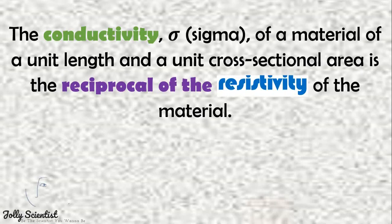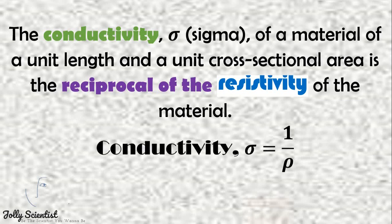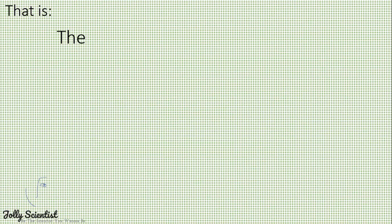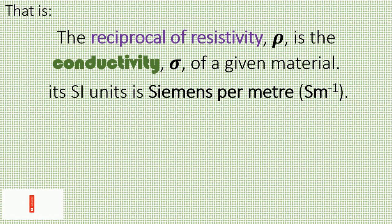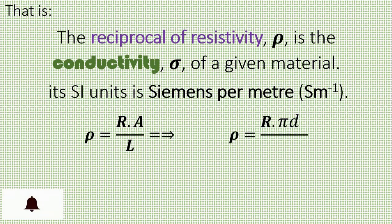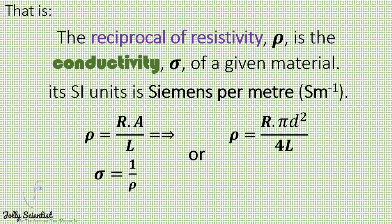Conductivity: The conductivity sigma of a material of unit length L and cross-sectional area A is the reciprocal of the resistivity of the material, where conductivity equals 1 over rho. Thus, the reciprocal of resistivity rho is the conductivity sigma of a given material. Its SI unit is Siemens per meter. If resistivity rho equals rho times A over L, or rho equals rho times pi D squared over 4L, then sigma equals 1 over rho, which implies 4L over R times pi D squared.